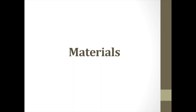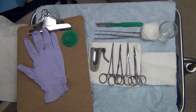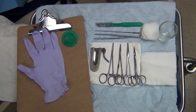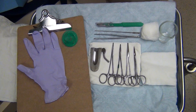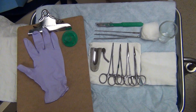All of the materials used to construct the circumcision model can be obtained on a hospital postpartum ward. The materials list includes an infant pacifier, nitrile glove, clipboard, and a circumcision set with either a Mogan or Gomco clamp.